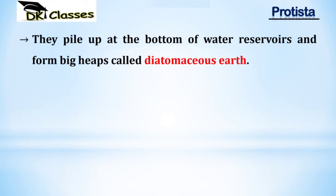Diatomaceous earth is formed from the fossils of diatoms — they pile up at the bottom of water reservoirs, one on top of another, forming a heap or mountain-like formation. Since diatoms' cell walls are made of silica deposits, the diatoms are rich in silica. Diatomaceous earth is a type of sedimentary rock and appears white and powdery.